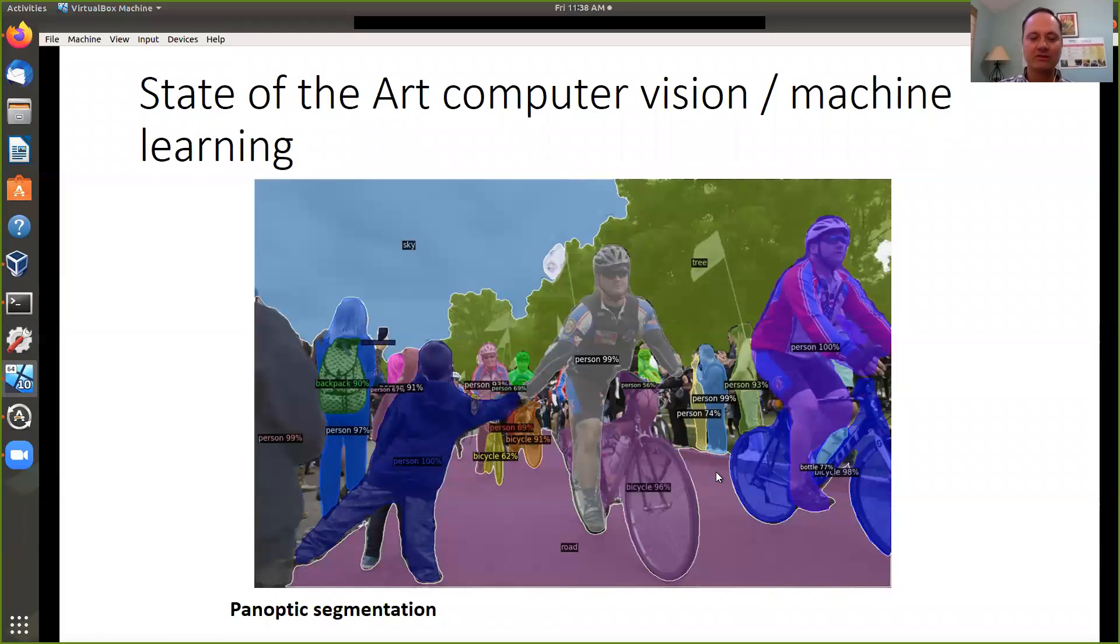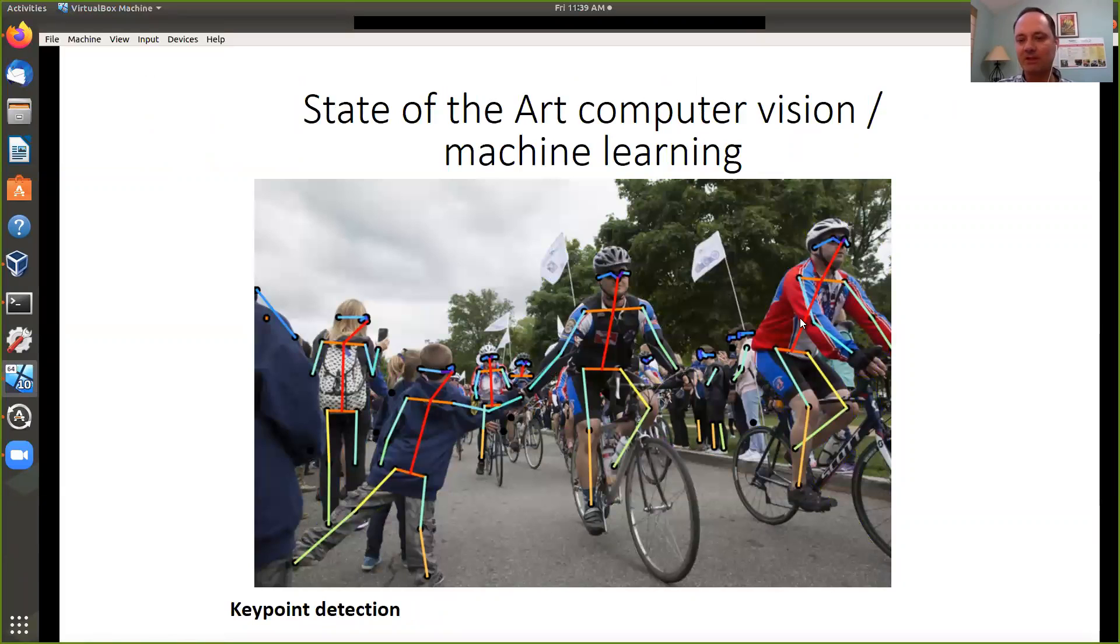Another thing you can do is what's called panoptic segmentation. For each pixel in the image, you can tell what it belongs to. The blue here is sky, the green is trees, then there's people and bicycles. It also tells you if there's several people, these pixels belong to person one, these pixels belong to person two.